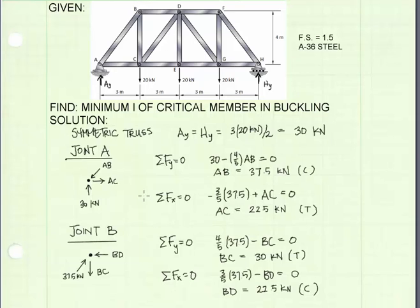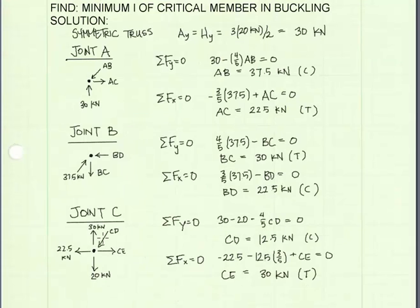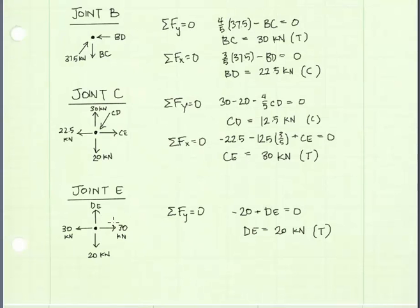Using method of joints at joint C, we can solve for members CD and CE. Finally, applying the method of joints to joint E, we can solve for member DE. We get that is equal to 20 kilonewtons in tension.